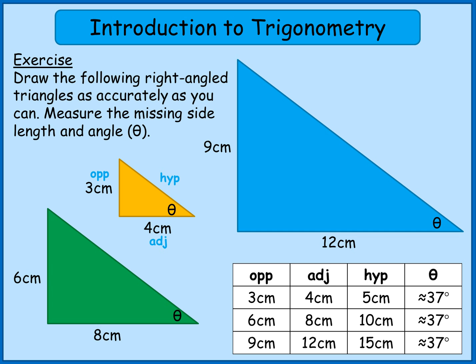That's because the green and blue triangles are an enlargement of the original yellow triangle. To get from the yellow triangle to the green triangle I've doubled the side lengths, and to get to the blue triangle I've tripled the side lengths. So the triangles are similar — the same basic shape but just enlarged or shrunk. The fact that the angle is the same in each one is going to be really important for what we do next.